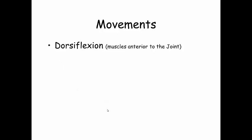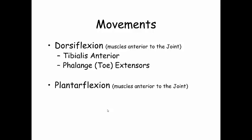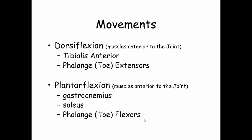So what movements occur here? Dorsiflexion is based on muscles anterior to the joint, based on line of pull, and they're listed here. And then plantarflexion, which based on the line of pull would be due to the muscles posterior to the ankle joint — the gastroc and soleus being two of them.